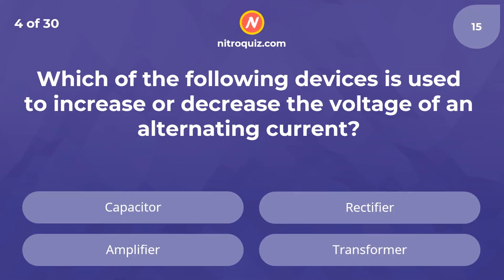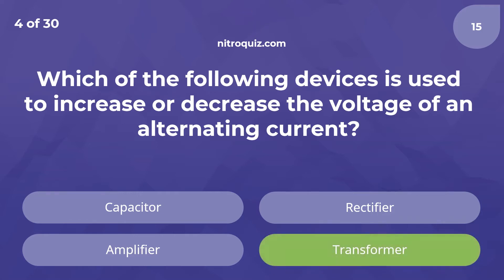Which of the following devices is used to increase or decrease the voltage of an alternating current? Answer is Transformer.